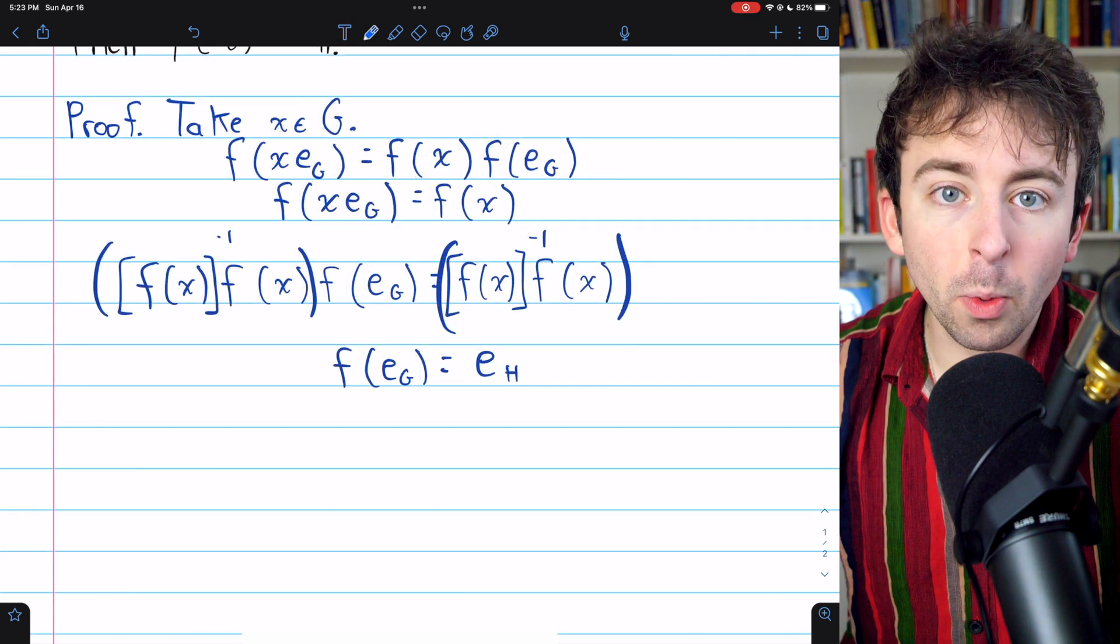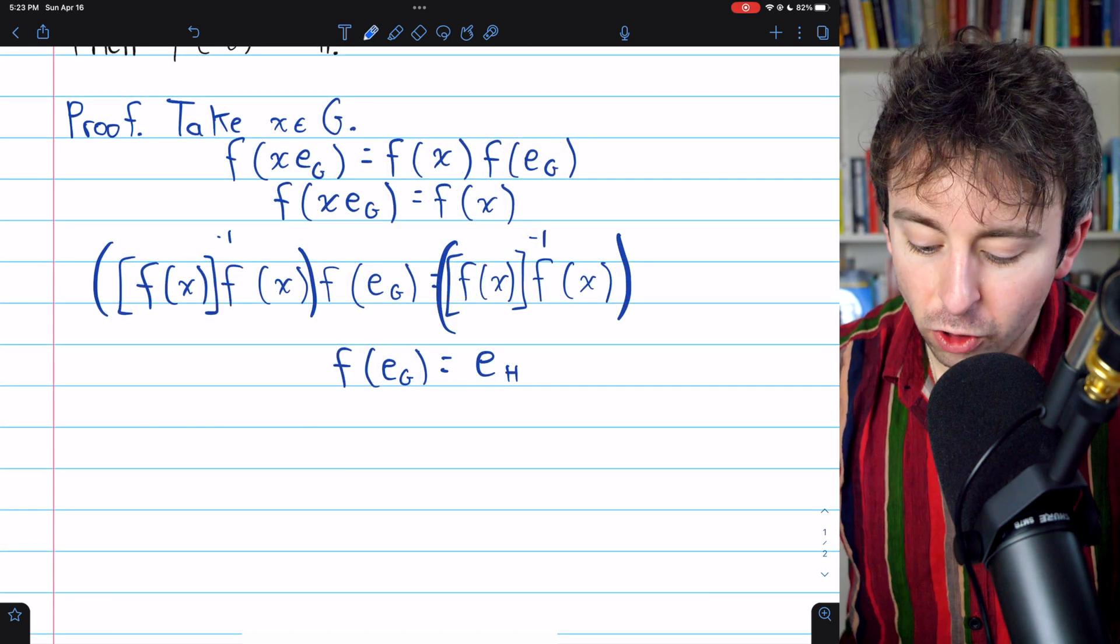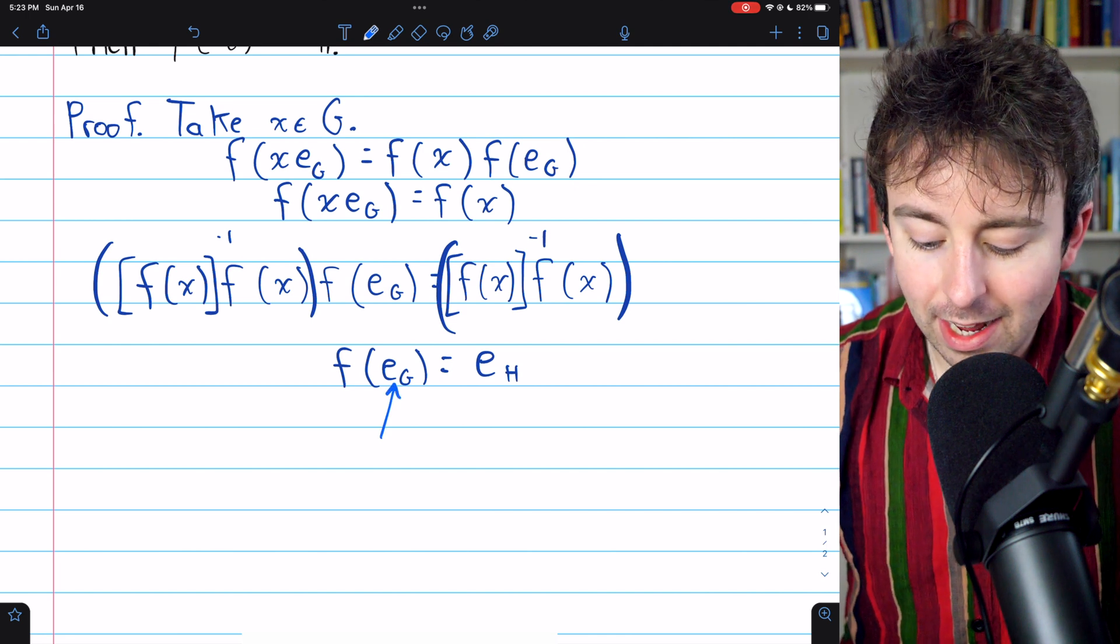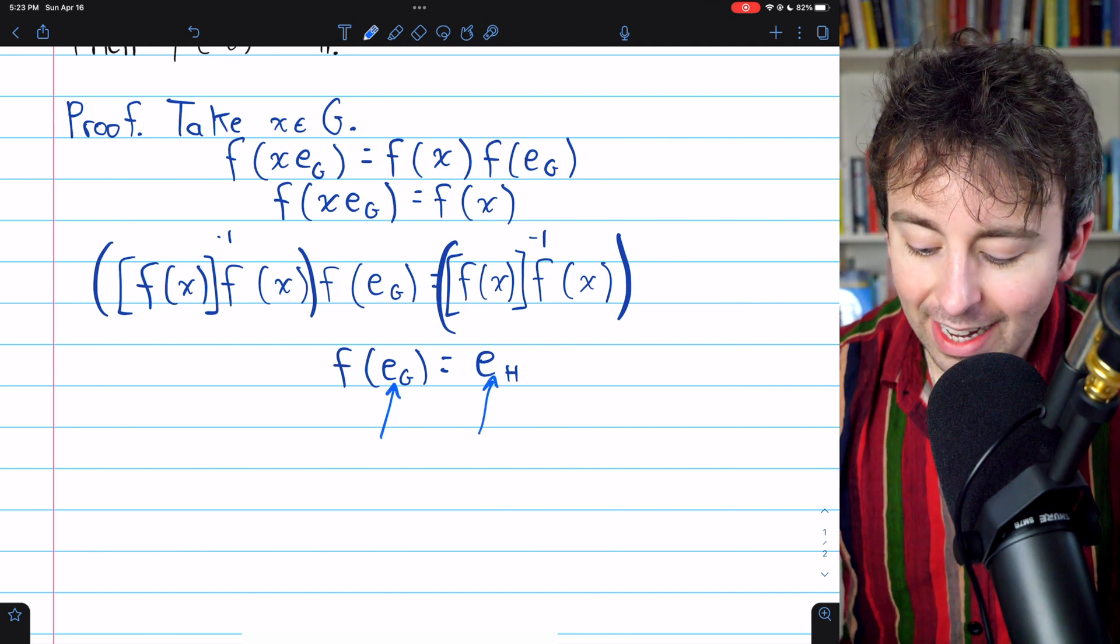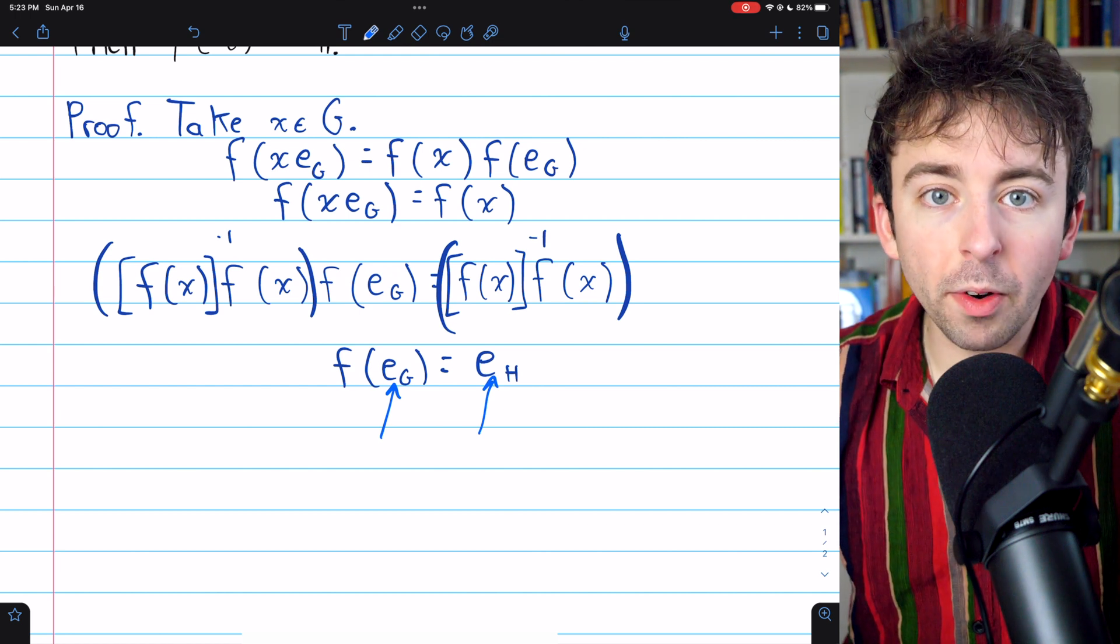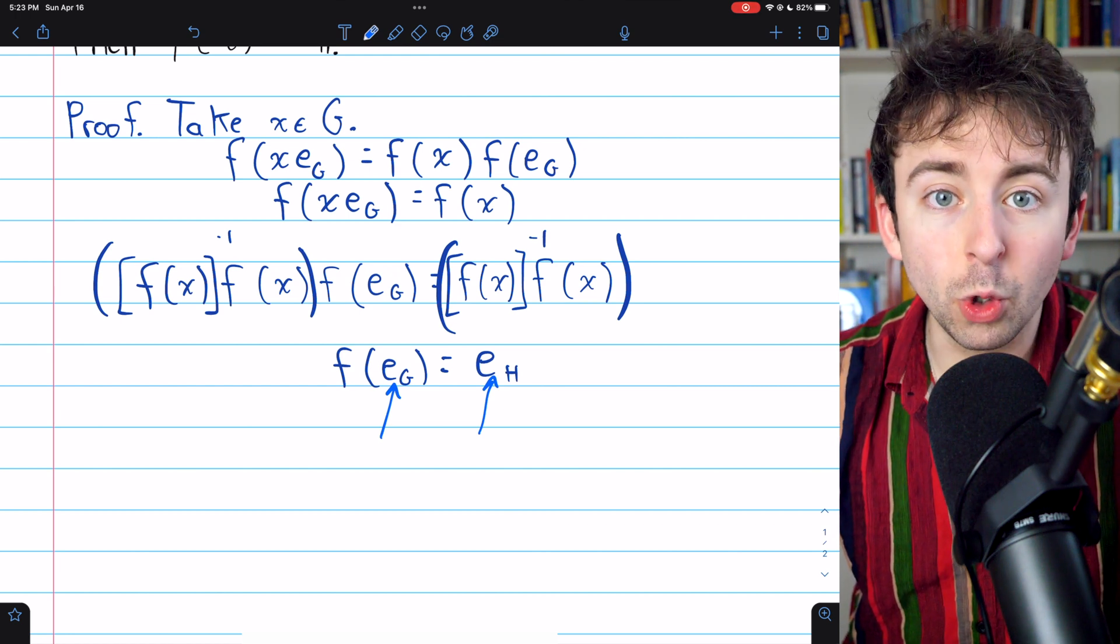We see that since f is a homomorphism from G to H, the image of the identity of G under the homomorphism is the identity of H. So homomorphisms map identities to identities.